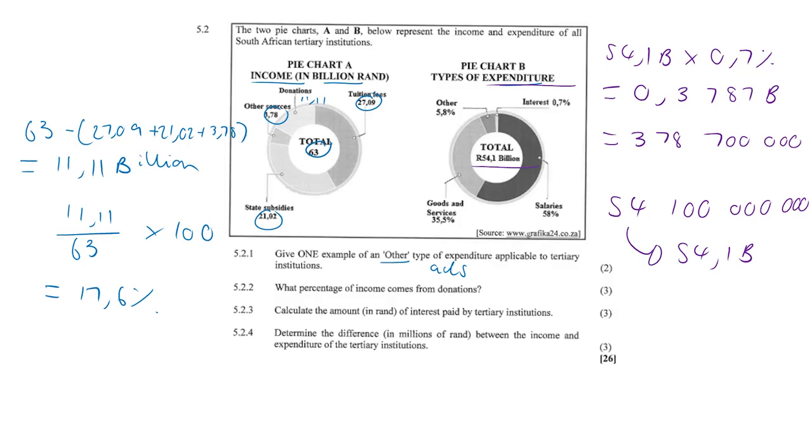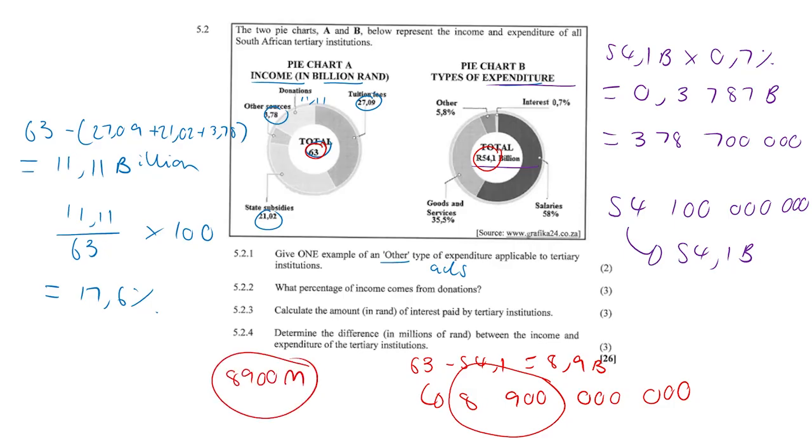Change color. 5.2.4, determine the difference in millions of rands between the income and expenditure of the tertiary institutions. Well, it's going to be this 63 minus the 54.1. And 63 minus 54.1 is equal to 8.9 billion. 8.9 billion looks something like this. So that's 8.9 billion, but we need to give our answer in millions. So that's what it would be in millions. 8,900 million. And that's your final answer. Nice question.